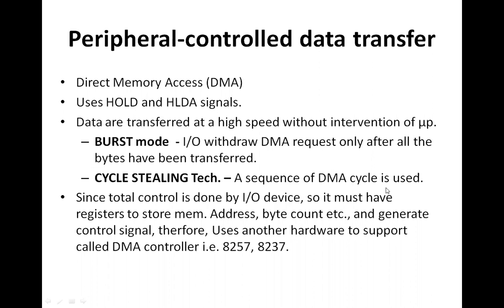The device can be a peripheral device. The data can be transferred between a peripheral device and the memory, from the memory to the peripheral device, or between two different memory devices. This DMA data transfer scheme is controlled by the device which wants to transfer the data, along with one controller called the DMA controller.